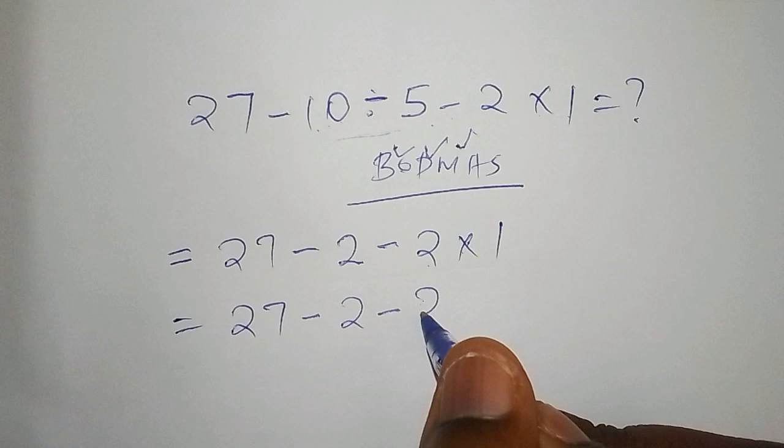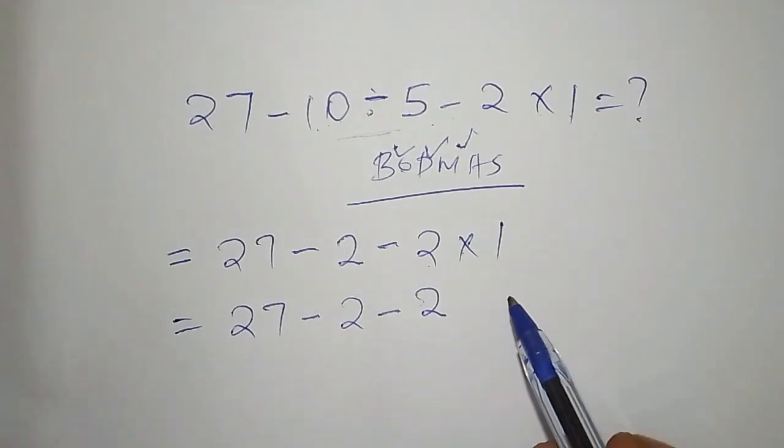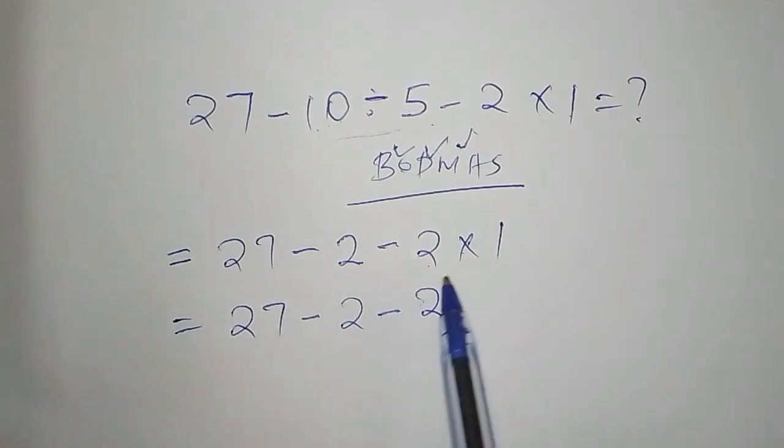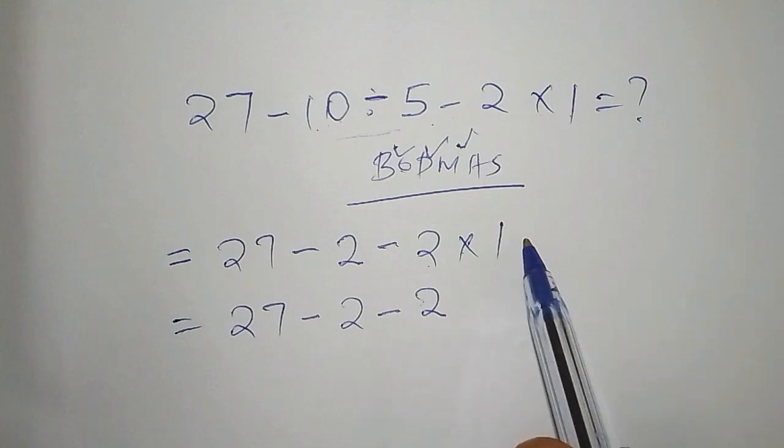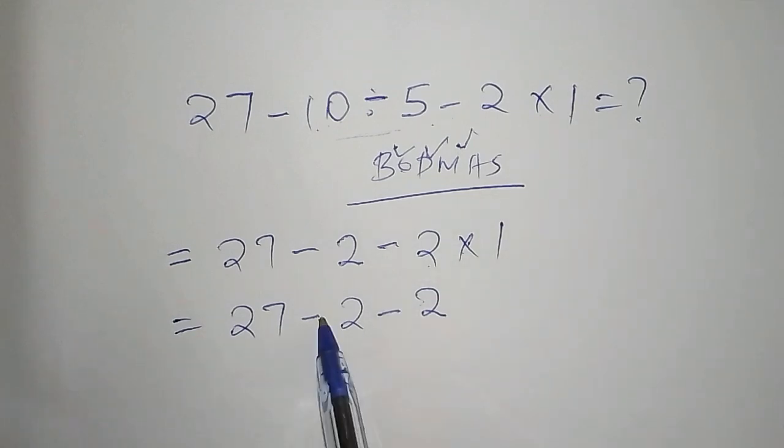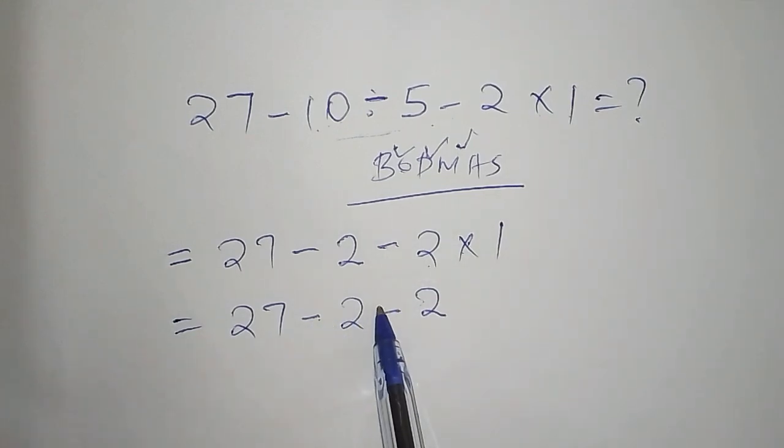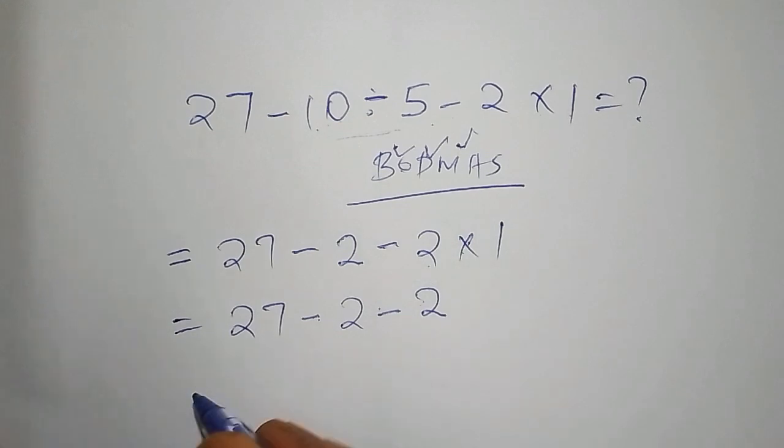So here we shall have 27 - 2 - 2 × 1, and 2 × 1, our answer is 2. So since now we are done with the multiplication sign, then our next step is the subtraction.